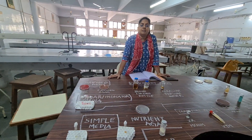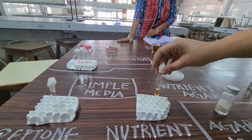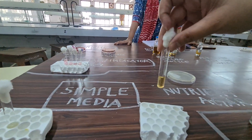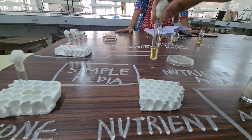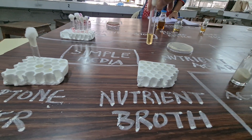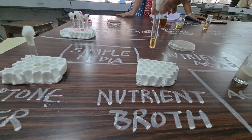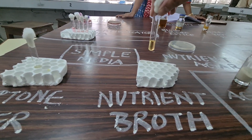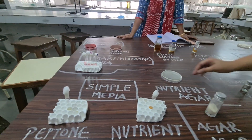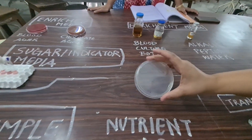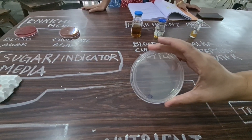Second is nutrient broth. Nutrient broth contains peptone water plus meat extract. Next is nutrient agar. It is the same as nutrient broth but it is a solid medium — the name itself suggests nutrient broth plus agar agar. It is also required for the growth of non-fastidious microorganisms.